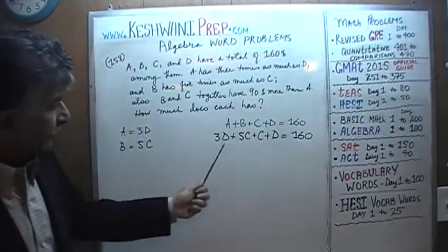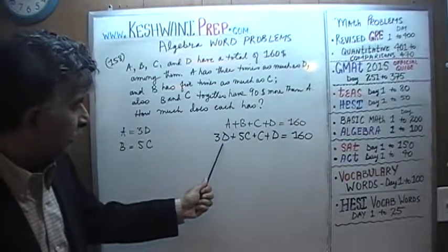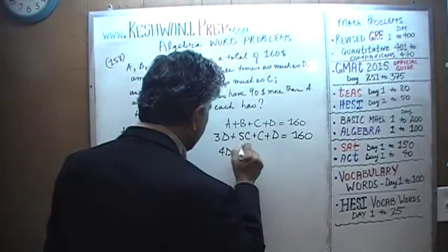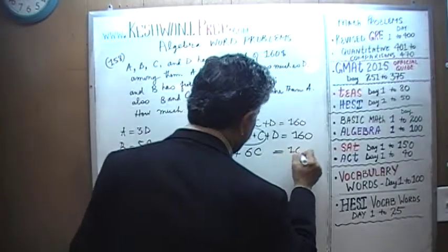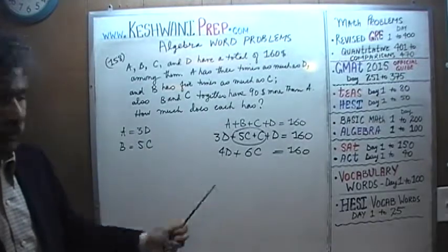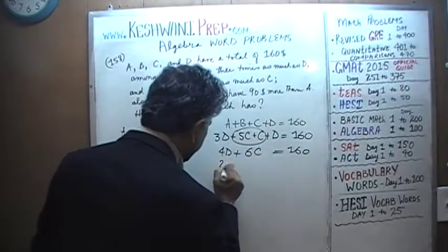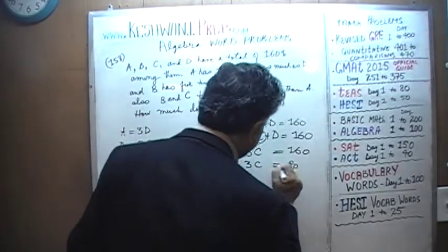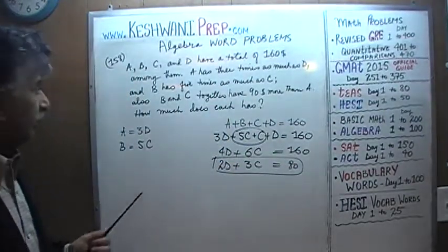Now we have an equation with only two variables, C and D. Combining 3D and 1D gives 4D, and 5C and 1C gives 6C, so 4D + 6C = 160. Since 160, 6, and 4 are all even, let's divide the entire equation by 2 to simplify, giving us 2D + 3C = 80. That's our simplified first equation.